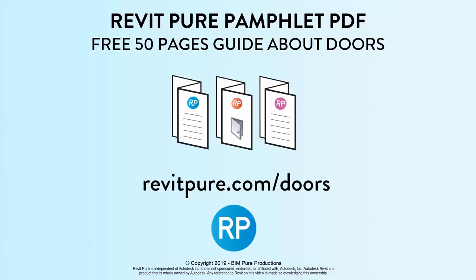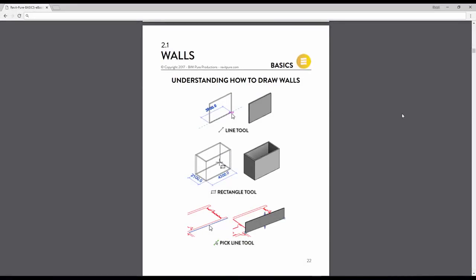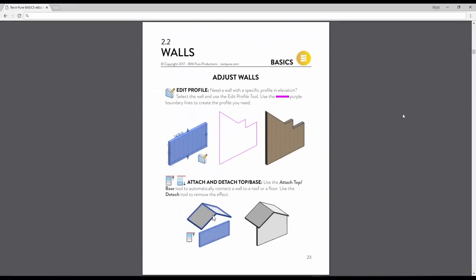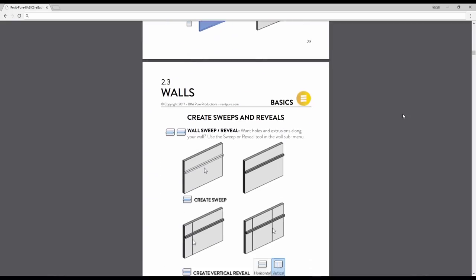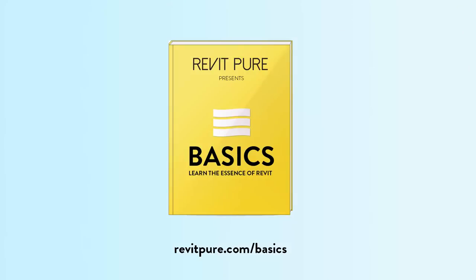If you have enjoyed this tutorial, make sure to download our free 50-page pamphlet PDF guide about doors at revitpure.com/doors. Also, make sure to check out the RevitPure Basics package. It contains an ebook, a complete video tutorial series, an exercise project, and a basic Revit template. Basics has been used by thousands of users. People love the simplicity and efficiency of the ebook — it is built with an emphasis on images and can be used by people of any skill level. Download the complete package at revitpure.com/basics.